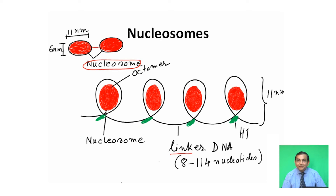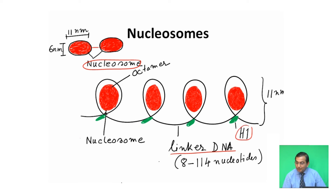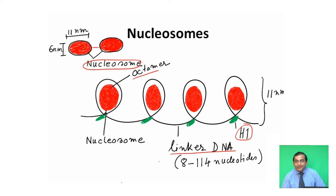Nucleosomes are connected to each other by linker DNA, and H1 histone is present in the linker DNA. The nucleosome is wrapped by the DNA molecule, and the histone protein forms an octamer. The length of the linker DNA varies from 8 to 114 nucleotides.